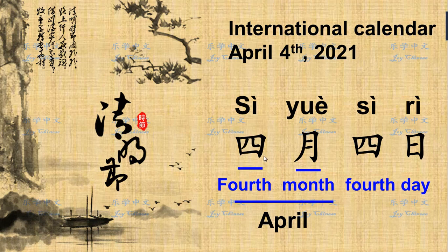In Chinese we say April 4th as 四月四日. 四 is the number four, 月 means month, so the fourth month of the year is April. 日 means day, so 四日 is the fourth day. Together, 四月四日 is April 4th. This is 清明节 for this year — in 2021, it falls on April 4th, and sometimes it's on April 5th depending on the international calendar.